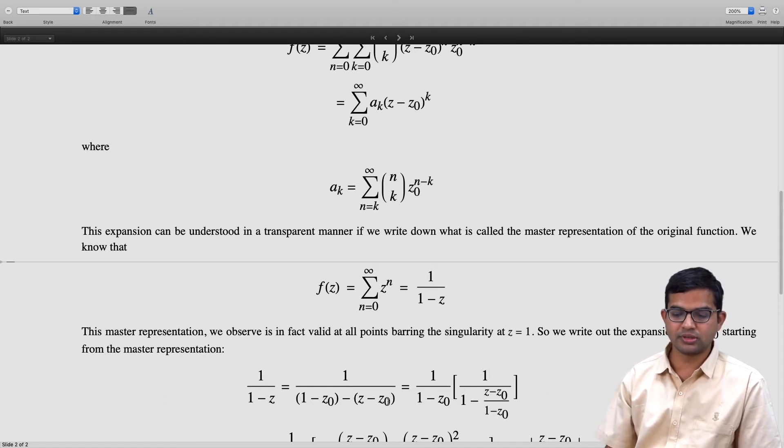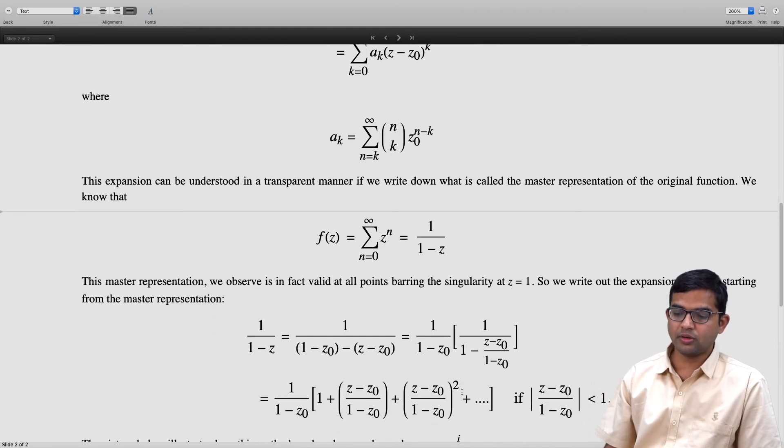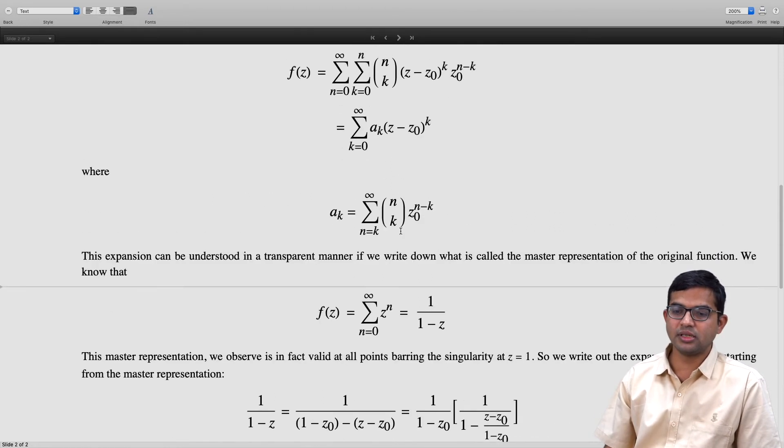We have to expand 1/(1-(z-z₀)/(1-z₀)). Then we argue that this is like the original series itself that we started.